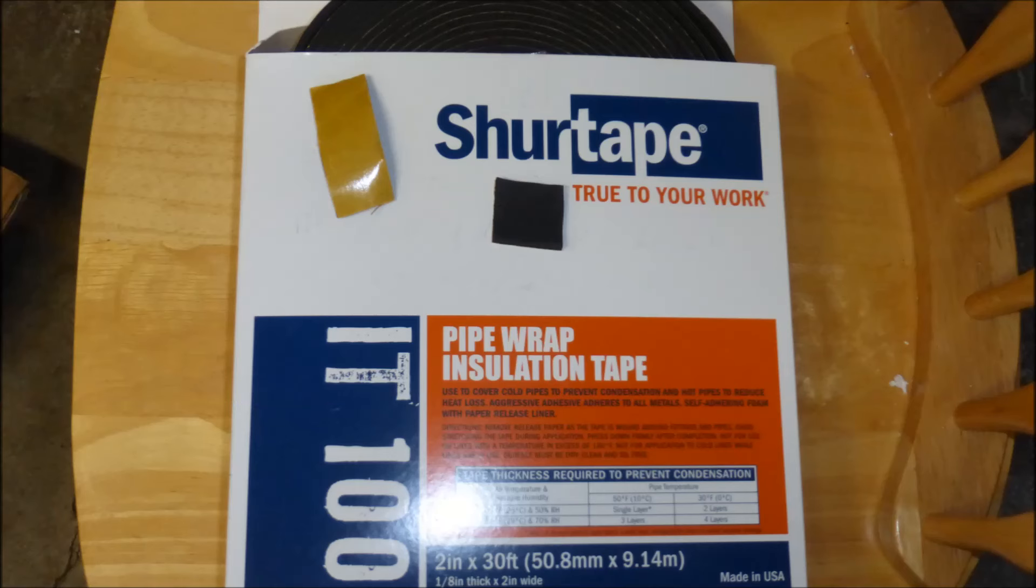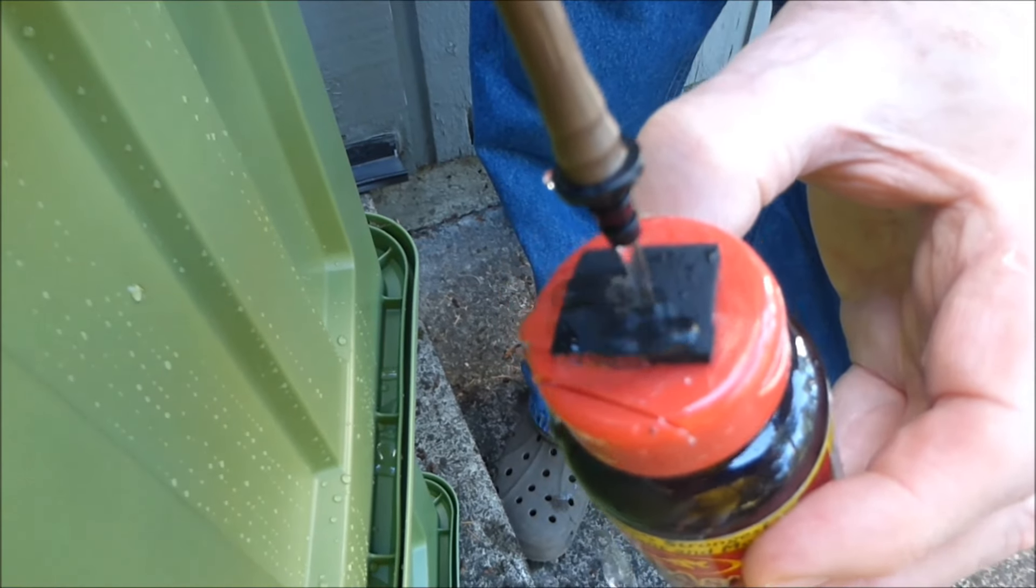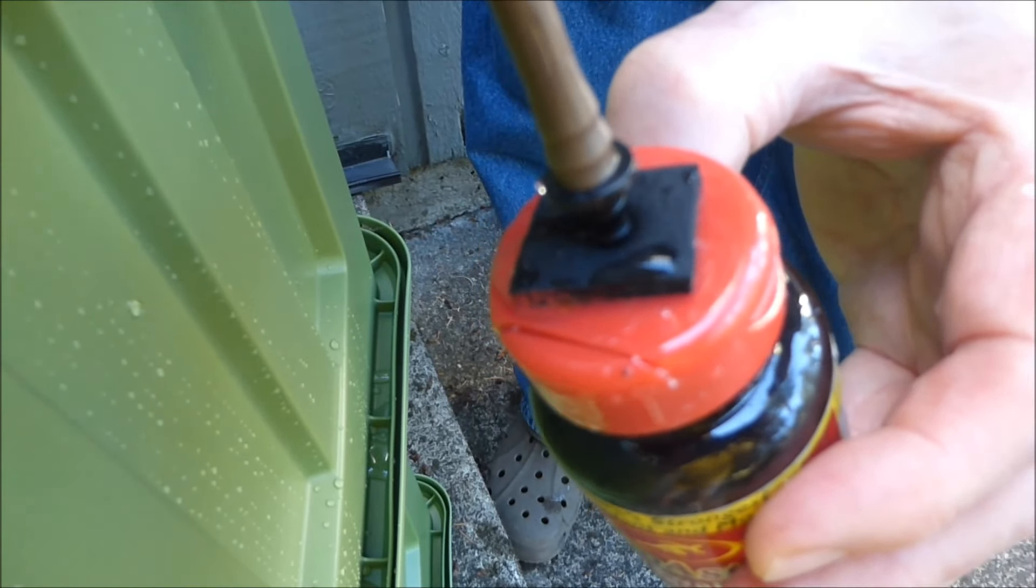SureTape IT100, one-eighth inch thick polyethylene foam material, works well as a seal to stop the water flow, but I'm on the lookout for an even better material. The nozzle presses against the foam material and stops the water flow.